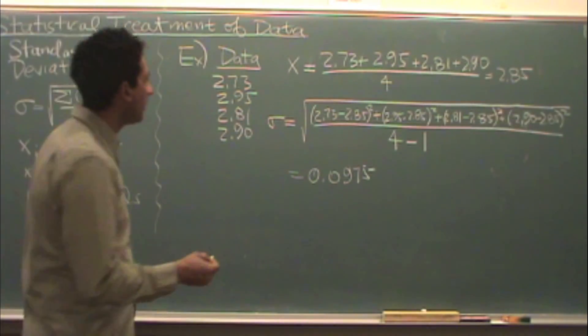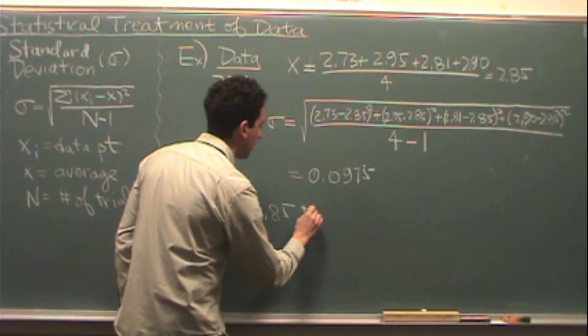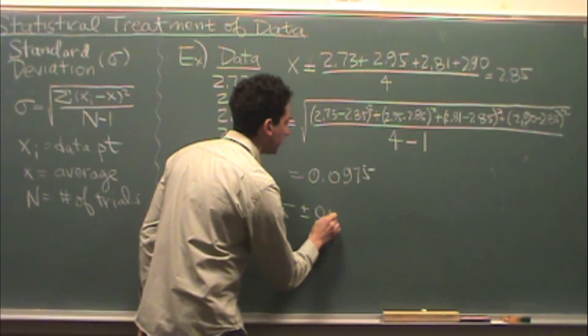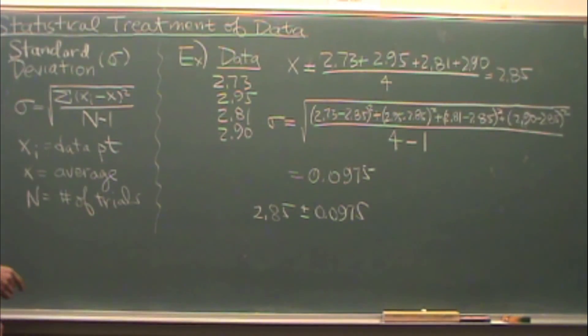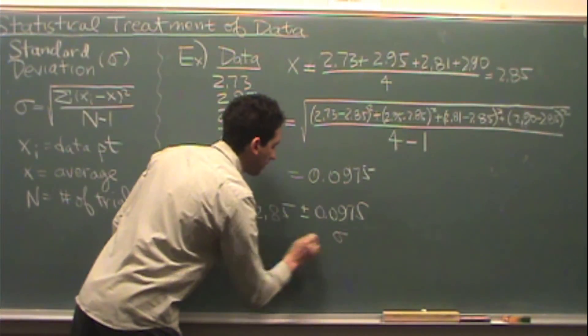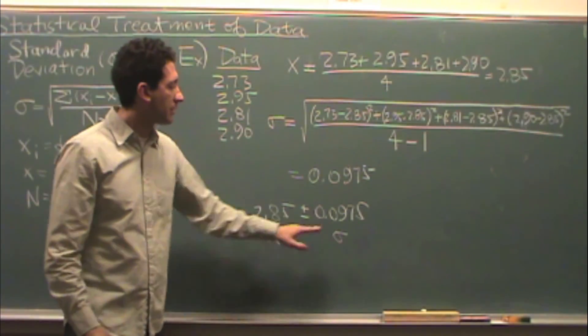What does that mean? Well, sometimes you might write like this. You might write the average, which is 2.85 plus or minus 0.0975. Basically, that second number, which is the standard deviation. Remember, the first number is your average. Basically, it's telling you how far away your data points are from the average. The smaller this number is, the better your set of data.